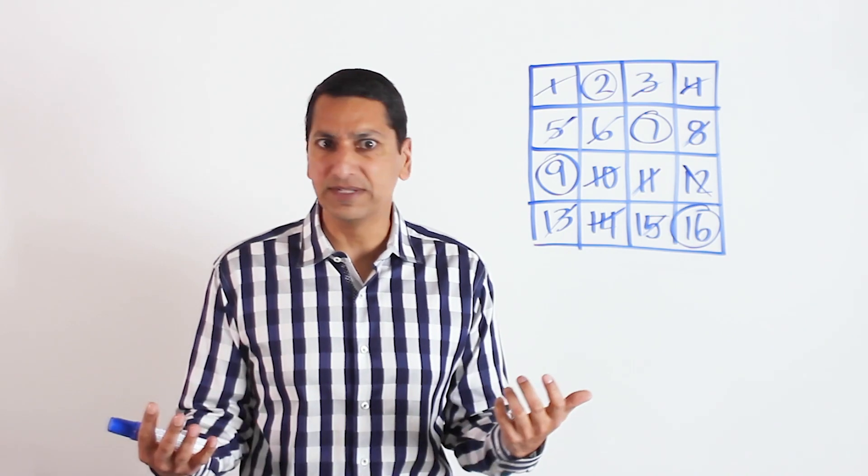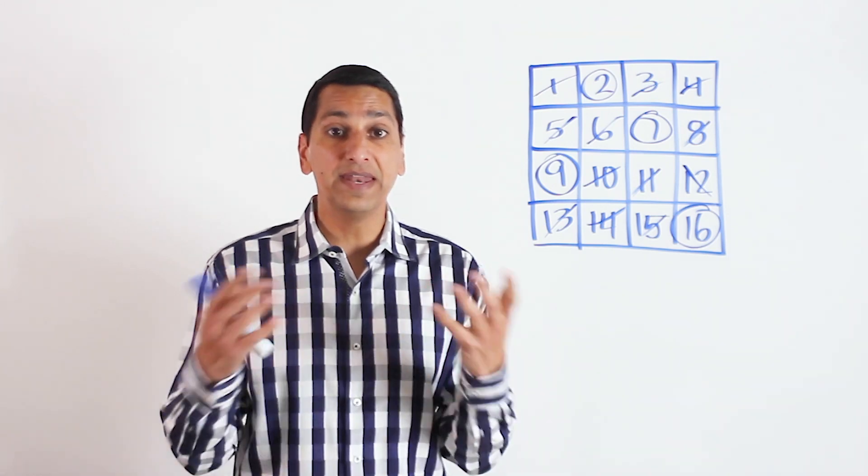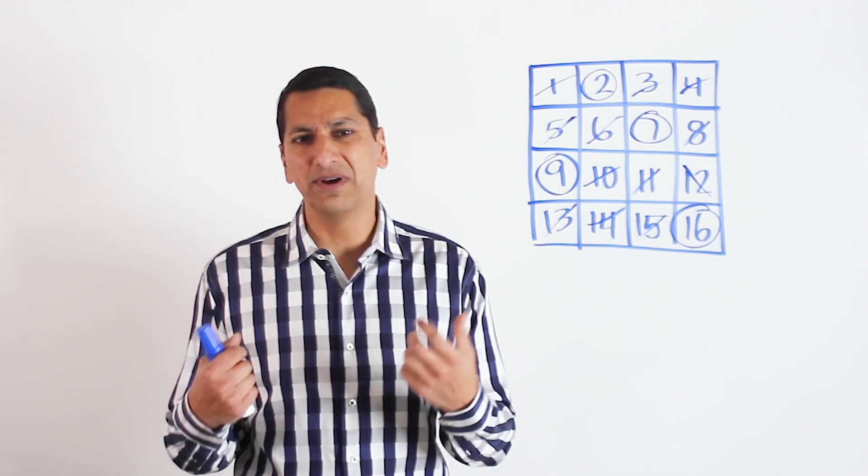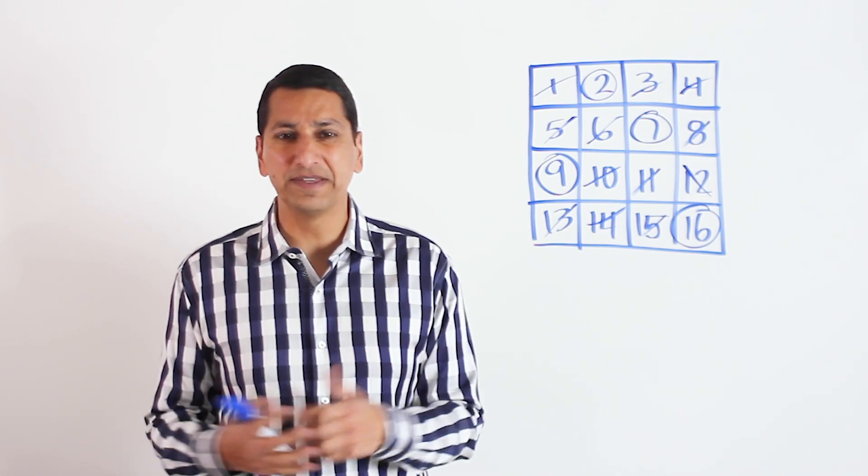And they'll start to notice that, wow, it doesn't matter what we pick. We always get 34. That's crazy. So then they can explore that. And then finally, they'll want to know, well, why 34? I don't know. What do you notice about the numbers up there?